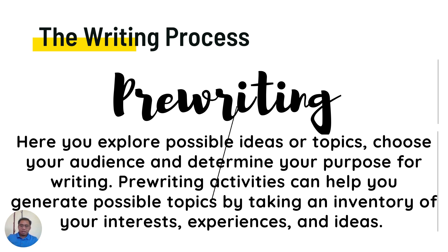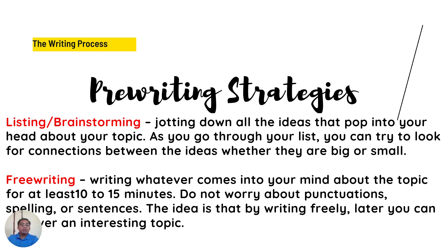The focus during pre-writing is on planning. After exploring possibilities for topics and how to present them, you can begin gathering and organizing details to develop your main idea. The first pre-writing strategy is listing or brainstorming — jotting down all the ideas that pop into your head about your topic. You can try to look for connections between the ideas, whether big or small. The purpose of listing or brainstorming is to discover ideas for possible exploration independently or in groups.